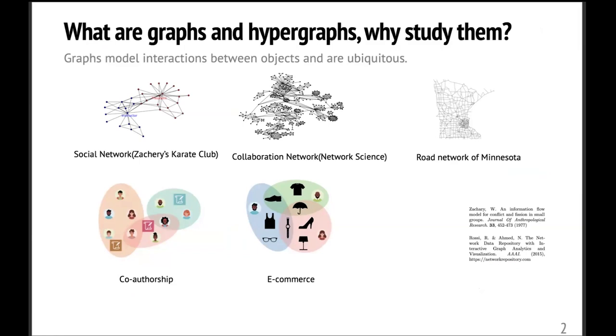In a normal graph, each edge can connect two vertices and in a hypergraph, each hyperedge can connect multiple vertices. So hypergraphs are natural generalizations of graphs for modeling higher order relations. And these graphs and hypergraphs are super common in the real world. Here I give a few examples.